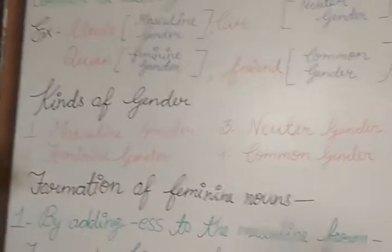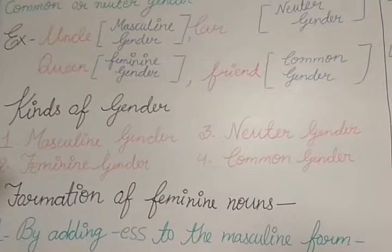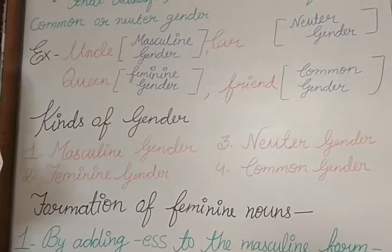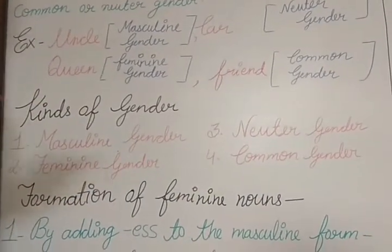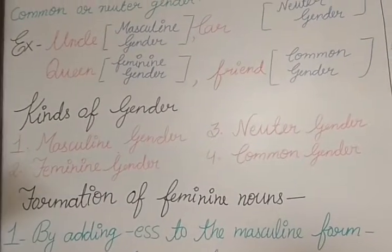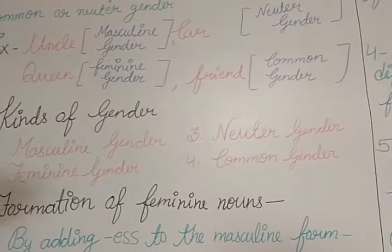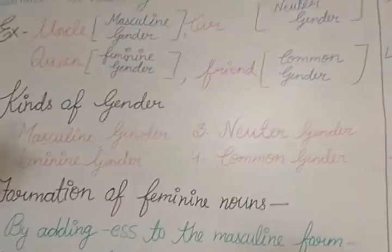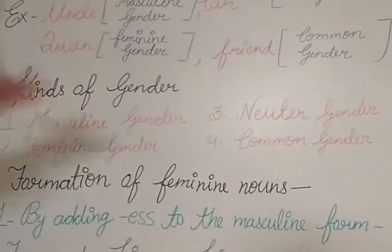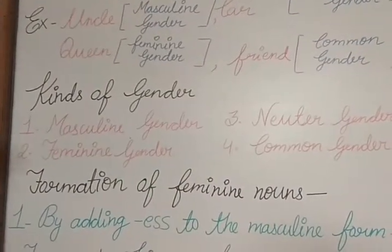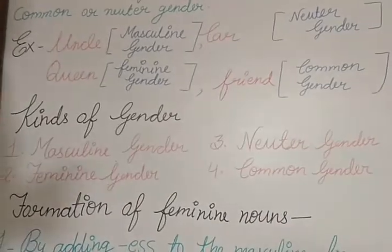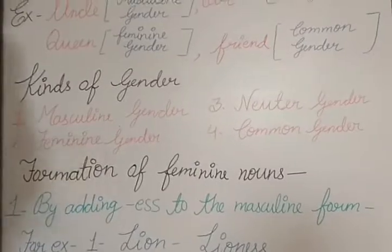Kinds of genders: masculine gender — the words which name the males; feminine — the words that name the female; neuter — the words that are neuter in nature, neither of them: table, bench, car. All these words are neuter. And when we talk about common gender, the words which can include both — a teacher can be a male as well as a female, friend can be a male as well as a female.